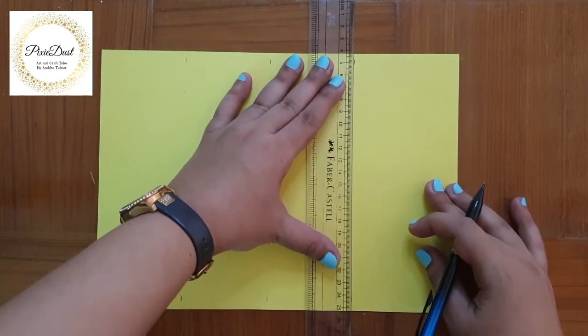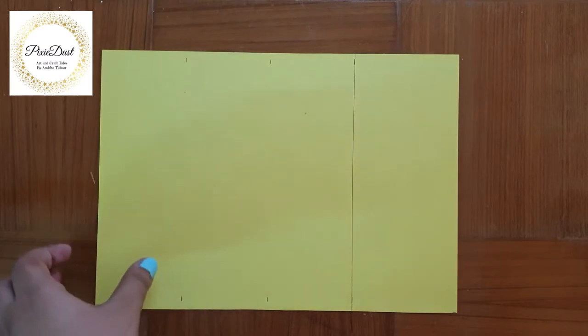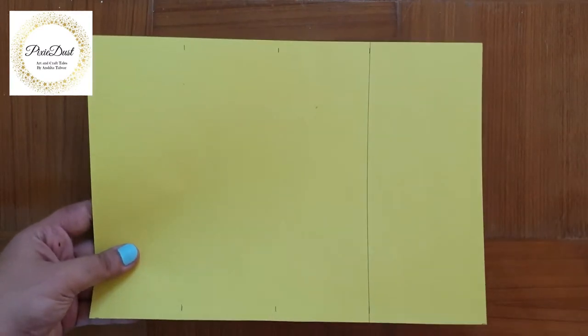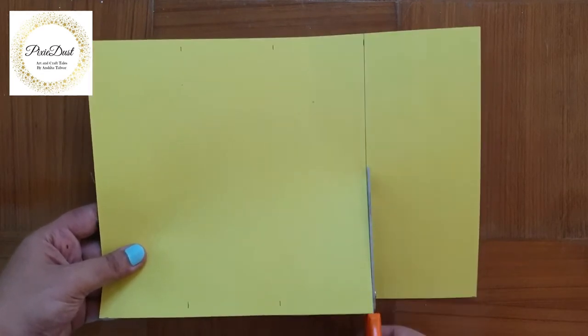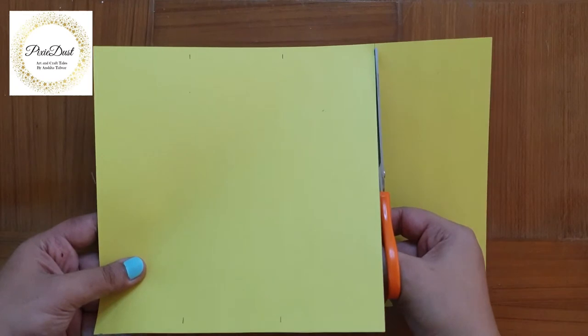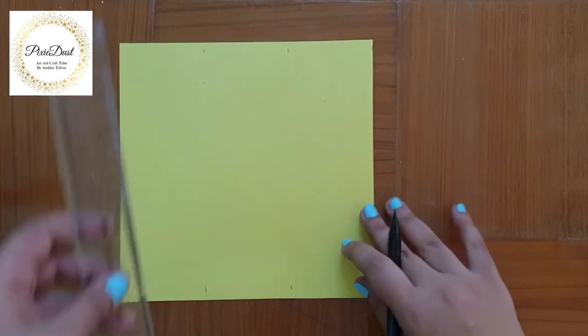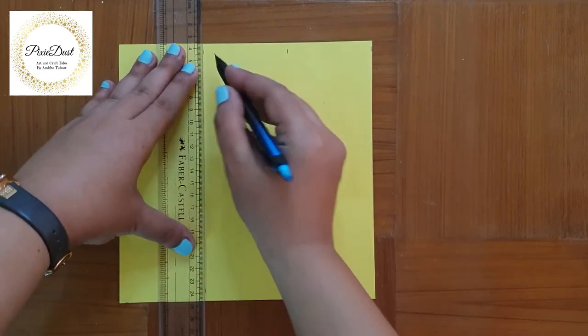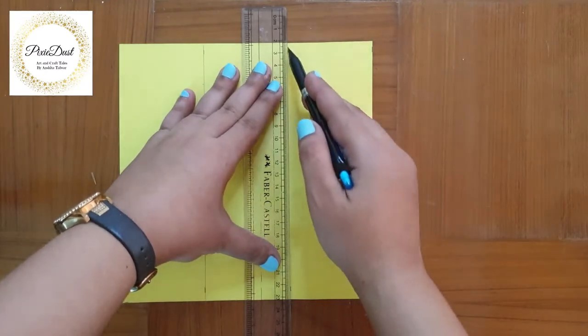Draw a line through the 21 centimeter points. Now I'm going to remove the excess paper so that I obtain a square which measures 21 centimeters by 21 centimeters. Now I'm going to draw a line through the 7 centimeter points and the 14 centimeter points.